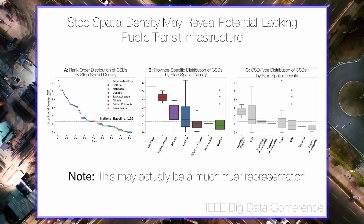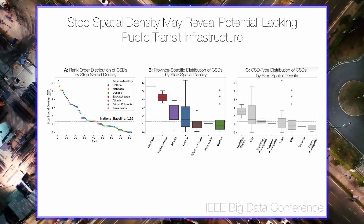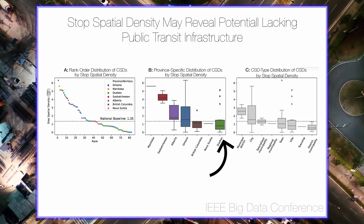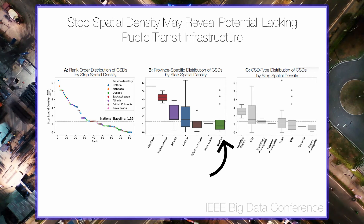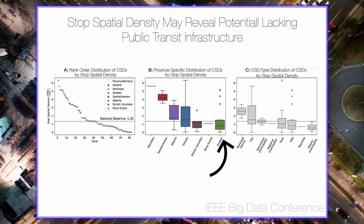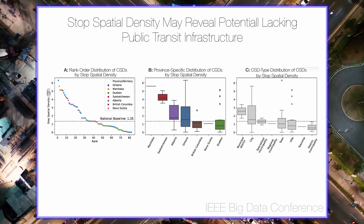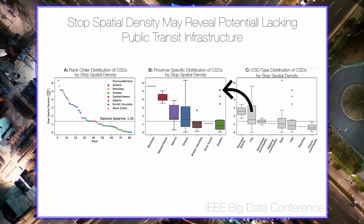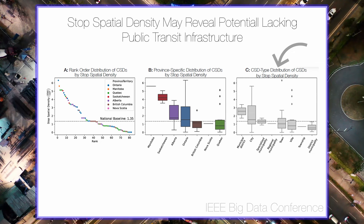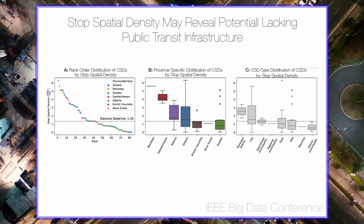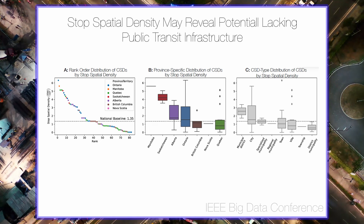We wish to emphasize that British Columbia's result may actually represent a truer picture of general stop spatial densities within and across provinces. Interestingly, at the lowest end of the spectrum, Quebec depicts the lowest median stop spatial densities, with the majority of its represented CSDs falling below the national baseline. While Quebec was found to be somewhat over-represented in the dataset, this may point to a more fundamental lack of public transit infrastructure, with the three outlier CSDs representing major cities: Montreal, Laval, and Quebec City. When grouping by CSD type, both municipal district and city are generally distributed above the national baseline, while district municipalities are considerably below it.